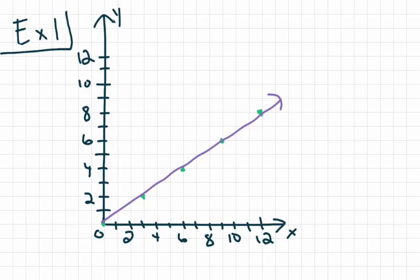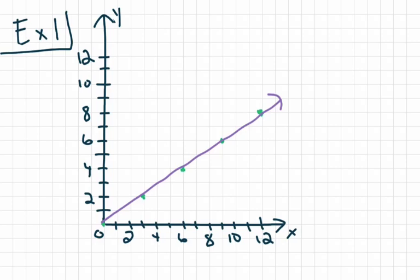For our first graph, I want you to pause the video and copy down this graph to the best of your ability. There aren't any labels for the x and y-axis and no title, so we don't know exactly what this graph represents. But we do see the line, and we can see that the line passes through the origin. Because it passes through the origin and is a straight line, we know for certain that this graph represents a proportional relationship.